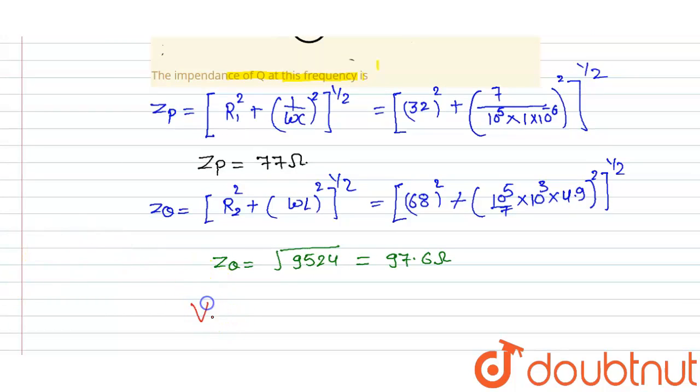Now we calculate the potential VP. That is I maximum multiplied by ZP. I maximum is 1 by 10, and the potential we get after putting the value of 77 ohms is 7.70 volts for P box.